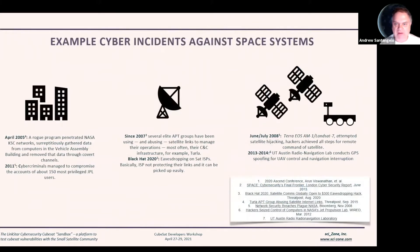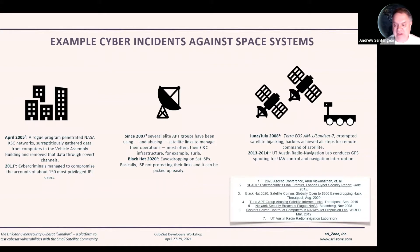This is a very small sample of some cyber incidents against space systems. For example, in April 2005, a rogue program penetrated NASA KSC networks, gathering data from the computers in the Vehicle Assembly Building. In 2007, several APT groups were using and abusing satellite links to manage their operations. And from a space segment point of view, in July 2008, there was an attempted hijacking of a large satellite in orbit, where they were actually attempting to remotely command the satellite.